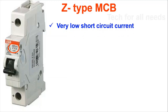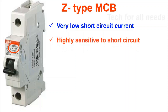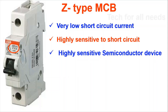K type MCB is for very low short circuit current applications. It is highly sensitive to short circuit conditions. It is used for semiconductor devices such as transistors, resistors, and capacitors. It is suitable for electronics boards with power supply systems where very low current is involved.